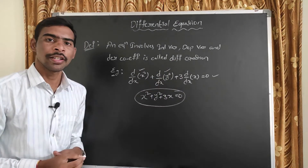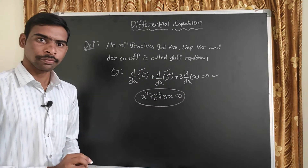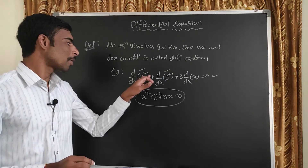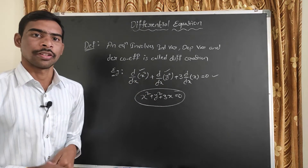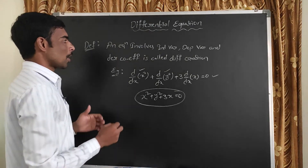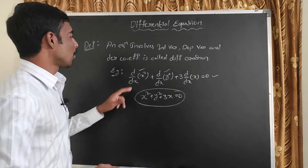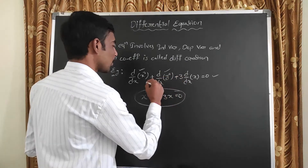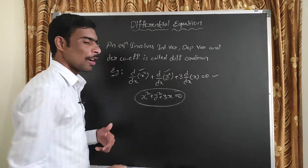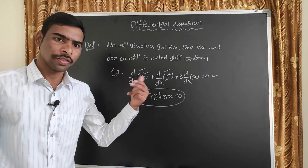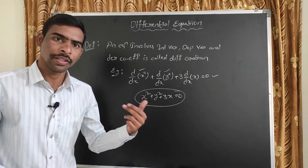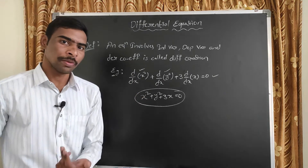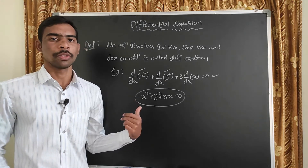We get the variables on the top — x, y are the variables. So variables are done. For example, x² plus y² plus z² — if we have variables x, y, and z, that means there are three variables.